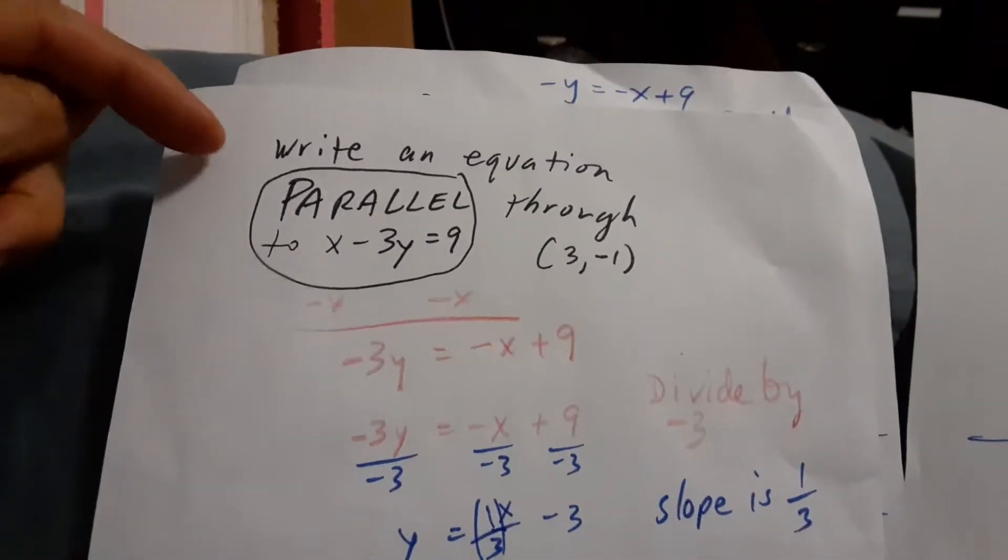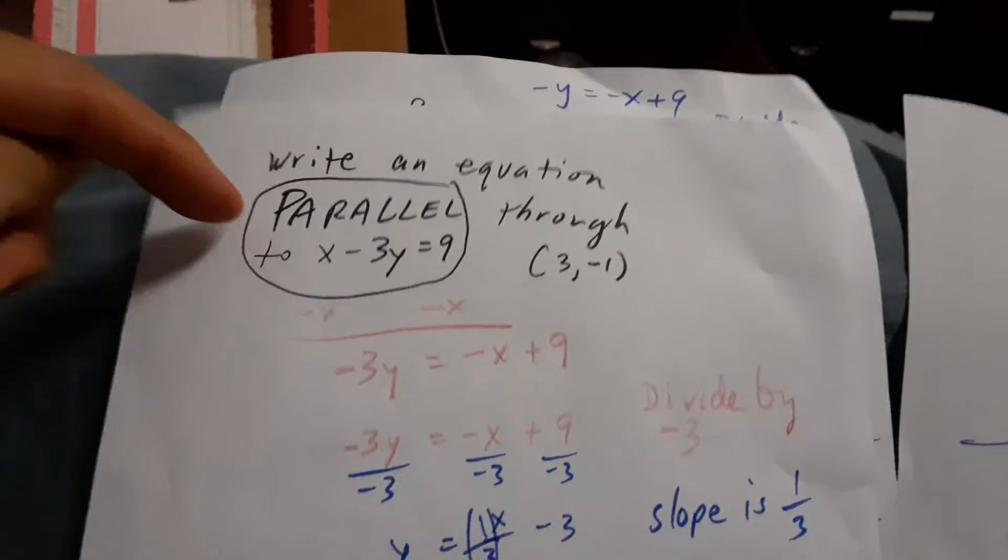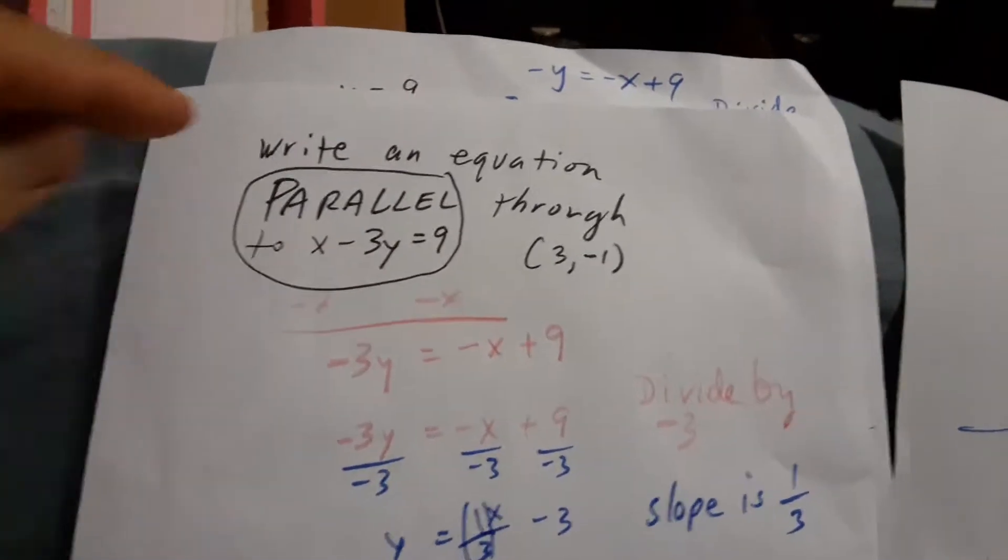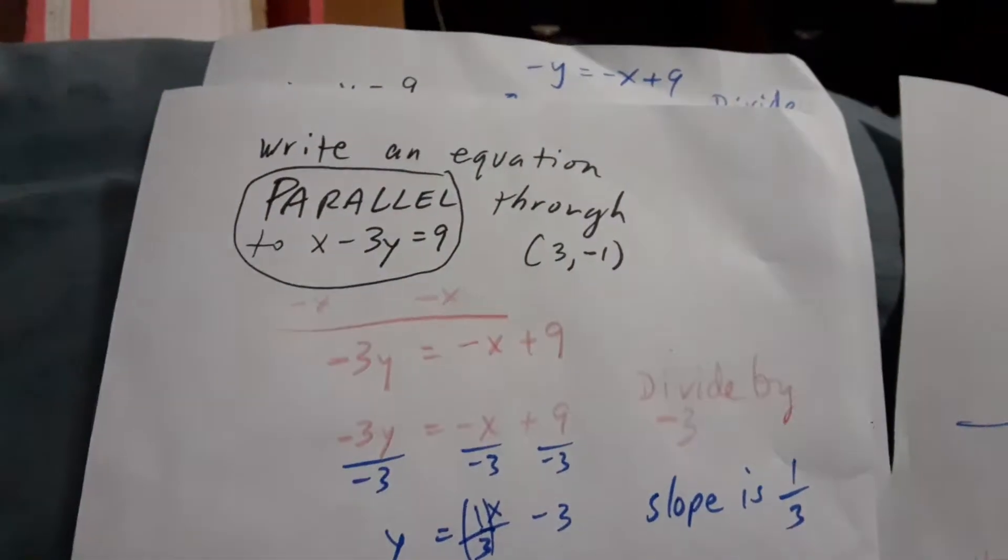Here's an interesting problem. They ask us to create a line that's parallel to x minus 3y equals 9, and make that line go through 3, negative 1.